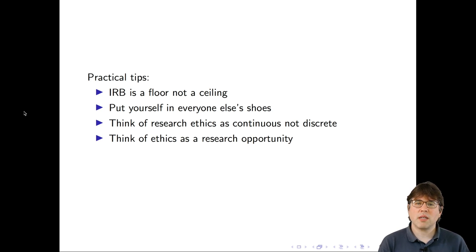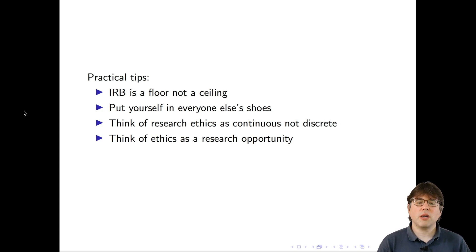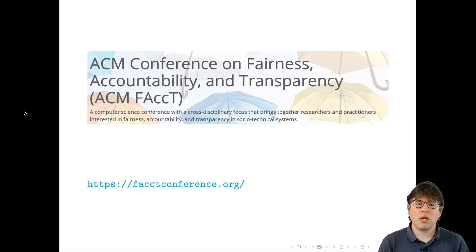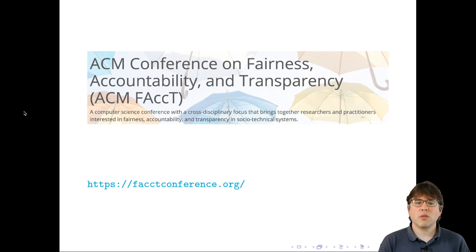Differential privacy is an example of this — an area of computer science where the goal is to allow safe data access in a privacy-preserving way. This is a huge area of research that creates lots of interesting and important research questions. Research ethics is really an area of opportunity. For example, there's the ACM Conference on Fairness, Accountability, and Transparency — previously called FAT* and now called FAccT — where people doing research specifically about ethics can publish their work.